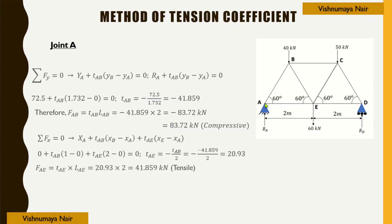Analyzing joint A, considering equilibrium along the y direction: YA + TAB·(yb−ya) = 0. With RA = 72.5 kN, yb = 1.732 m, ya = 0 m: 72.5 + TAB·1.732 = 0. Therefore TAB = −72.5/1.732 = −41.859.